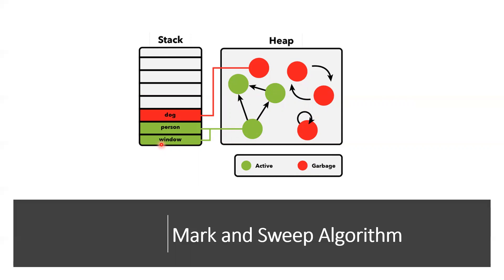Objects that are not reachable from window — shown in red here — are considered unreachable. Those are marked, and after some time they are swept away. The garbage collection algorithm works periodically: it marks all unreachable objects and after some time removes them. This is how memory allocation and the garbage collection algorithm work.